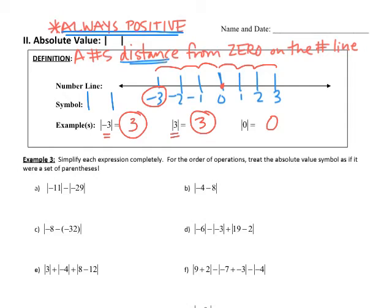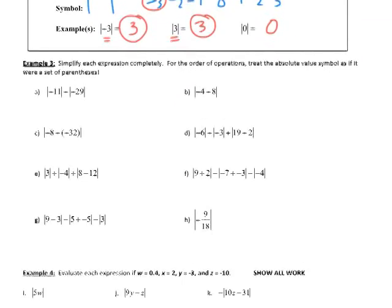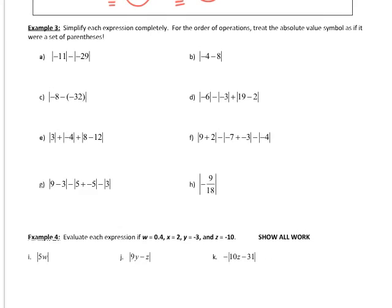When simplifying absolute value expressions, treat the absolute value symbol as if it were a set of parentheses for order of operations. For part A, the absolute value of negative 11 is just 11, and the absolute value of negative 29 is 29 because we have to make it positive. There is a minus sign between the two absolute values, so we keep that: 11 minus 29 equals negative 18.